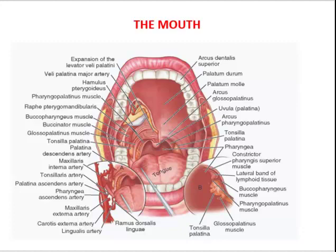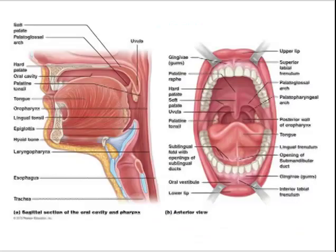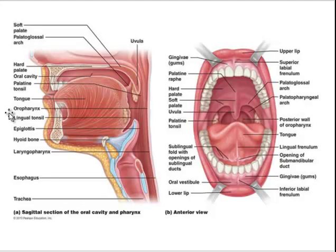This is the structure of the mouth and the muscles of the mouth. The mouth is a mucosal-lined cavity, also known as the oral or buccal cavity. It is bounded by the lip anteriorly, palate superiorly, and tongue inferiorly. The anterior opening is the oral orifice. It is continuous posteriorly with the oral pharynx via the fauces.